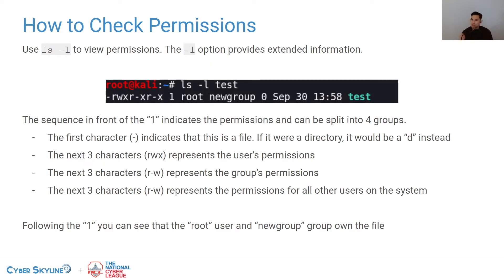To check permissions, you use the ls command with the dash-L option. The dash-L option gives you extended information. Normally ls will just tell you the names of the files and folders, but with dash-L you can see a little bit more — specifically a series of dashes, Rs, Ws, and Xs that represent the permission string.